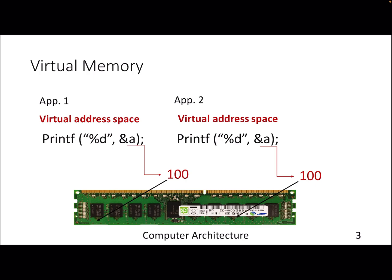This is the illusion I was talking about. Let's say we have two different processes — two different software applications — and even if they use the same variable in their program, they may get the same address when you print their addresses, but finally they are actually mapped to two different locations in DRAM. The virtual address for one process may equal the virtual address for another, but they actually occupy different locations in the actual DRAM.